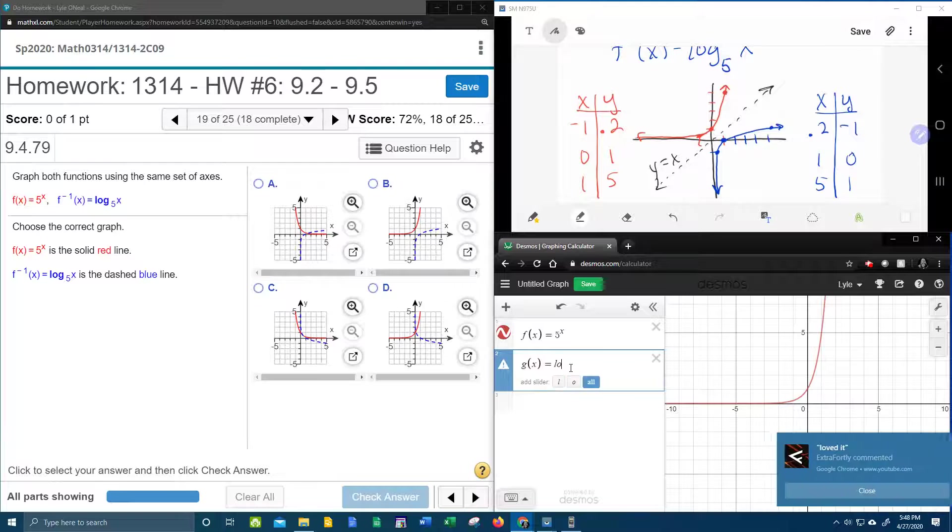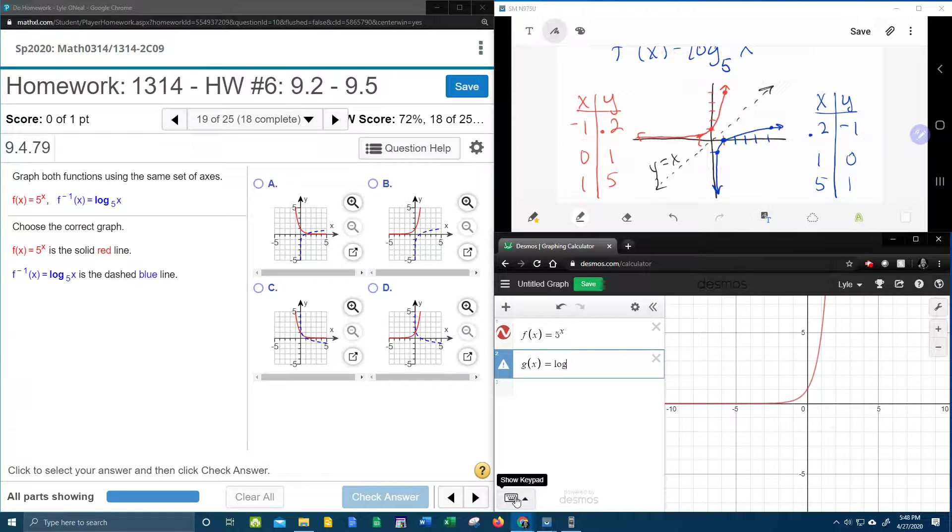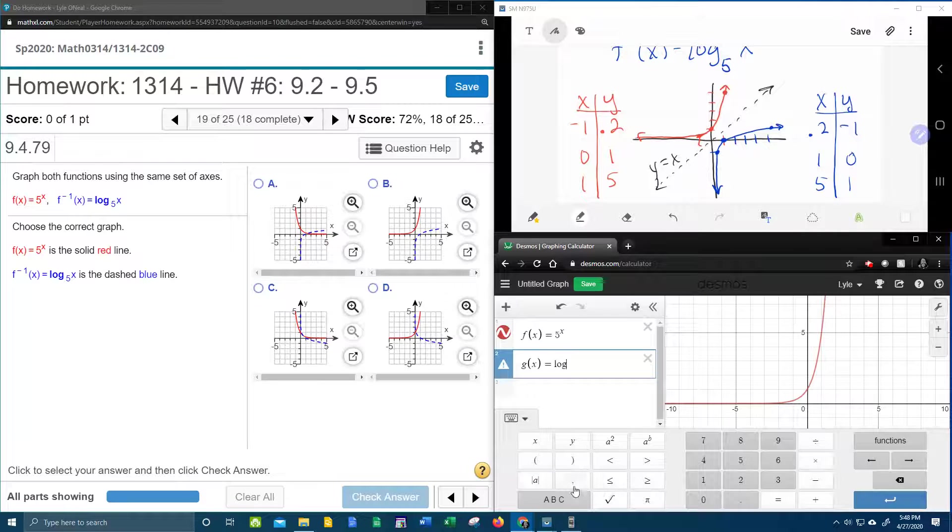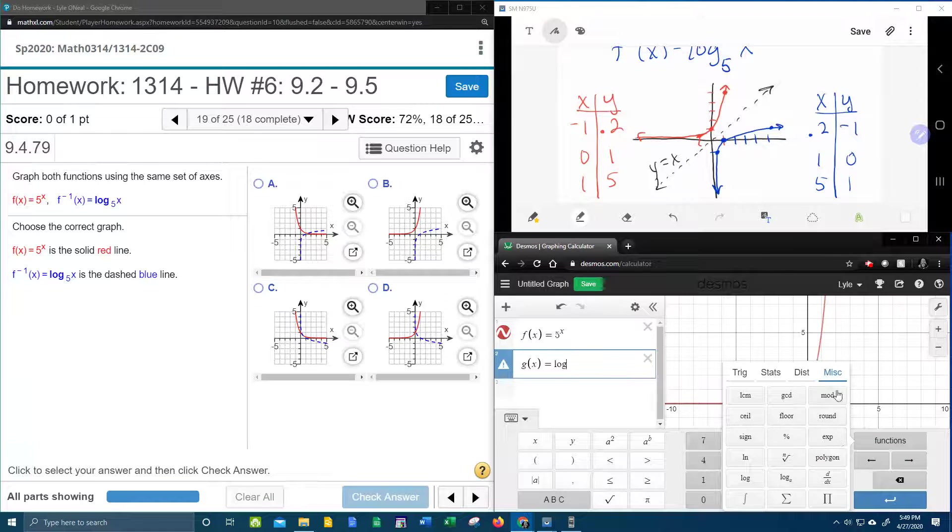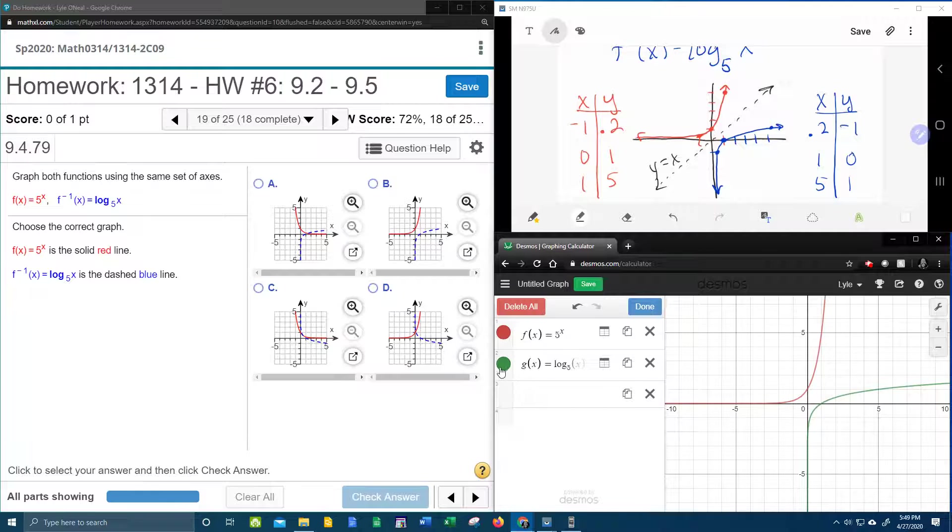So we're going to say log log. To do a base, we're going to pull up the keyboard. And I'm looking for subscripts. I don't see subscripts. So let's go to functions. And here's a log subscript. So let's actually go back and delete this. And choose log subscript 5 of x.